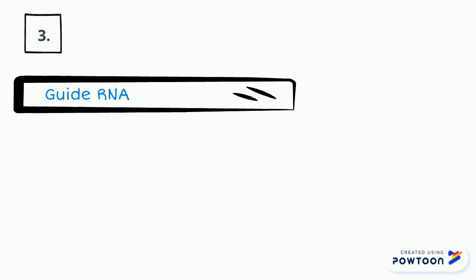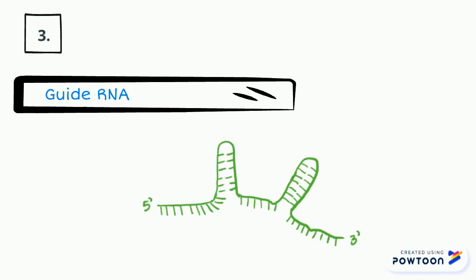The third part is the guide RNA, or PEG RNA, which stands for prime editing guide RNA. The PEG RNA acts as a navigator, navigating the complex to the target DNA in the genome.